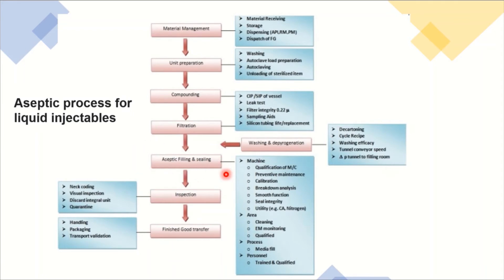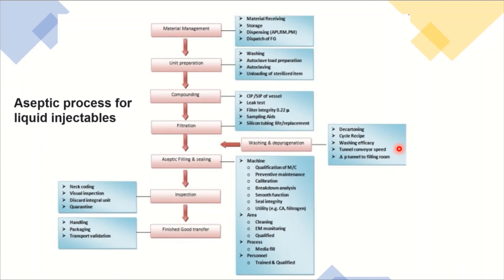For lyophilized products, after aseptic filling there is half-stoppering, then lyophilization, then stoppering, then inspection and goods transfer. Whatever your process, try to split all contributing factors. For material management: receiving, internal storage, dispensing, dispensing area qualification, and dispatch. For washing and depyrogenation: decartonning area, inspection system, washing cycles qualified for intended purpose, tunnel speed, conveyor, and HEPA filter monitoring of the tunnel.